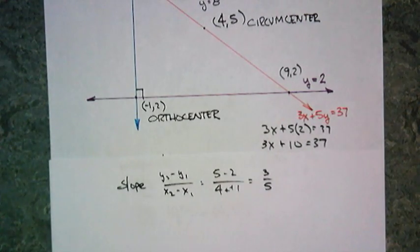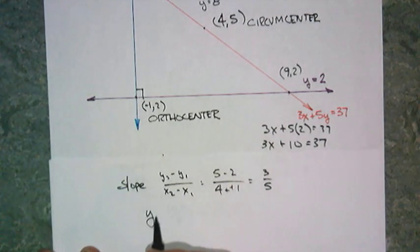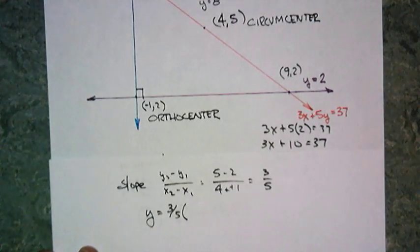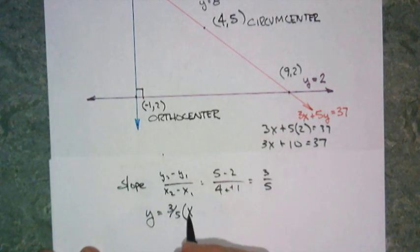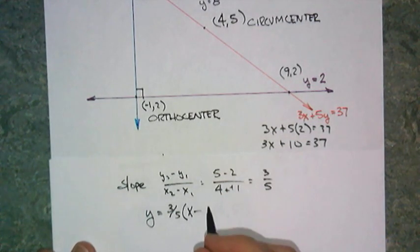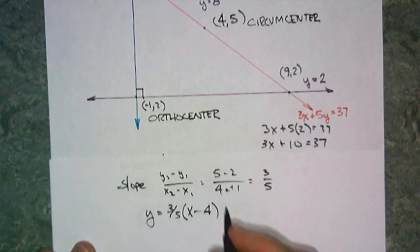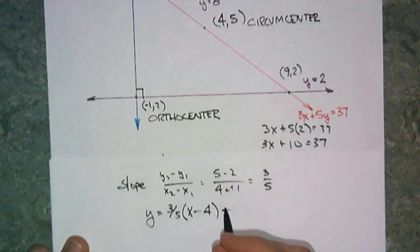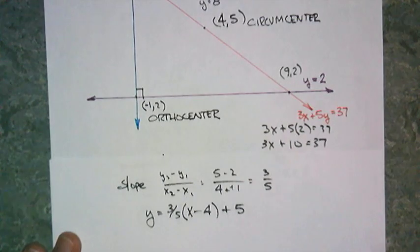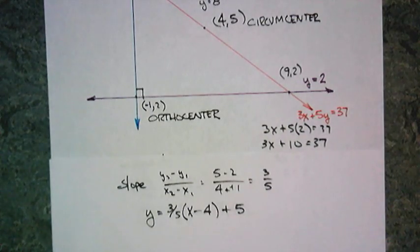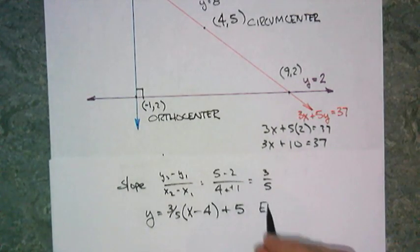Now, I can write it quickly using the point slope formula. y equals 3 fifths, choosing either one of the points. We can do, I don't care. Let's do 4, 5. x minus 4 plus 5. There is my equation for the Euler line.